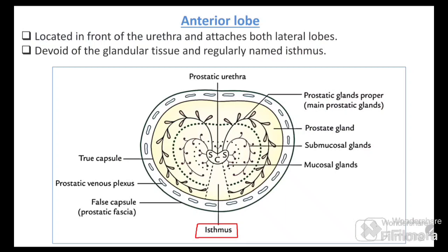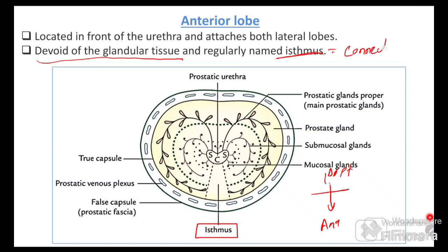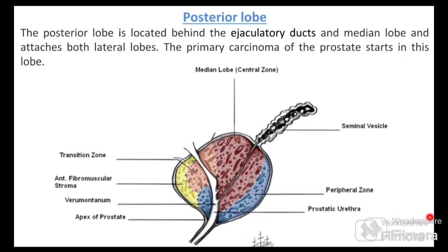The anterior lobe is located in front of the prostatic urethra and is a non-glandular part — it has no glandular tissue. It is also known as the isthmus, meaning a connecting structure. The anterior lobe (isthmus) is non-glandular.